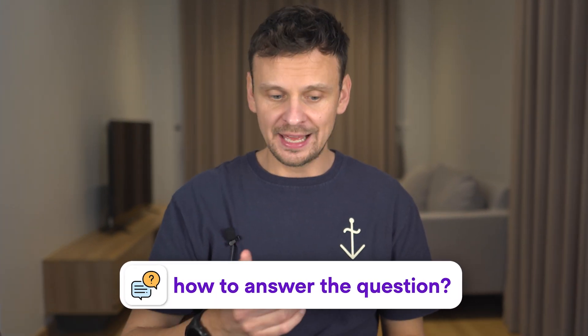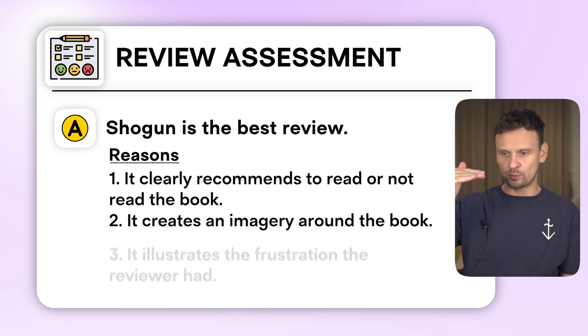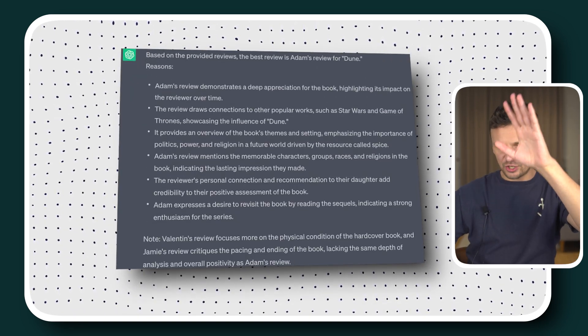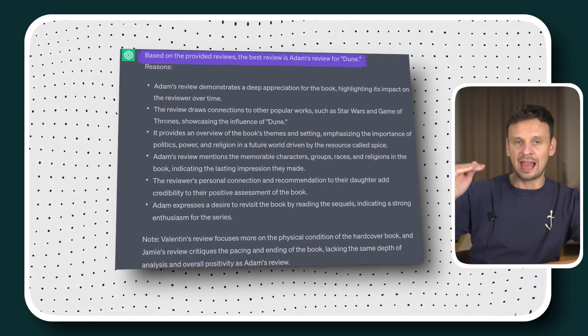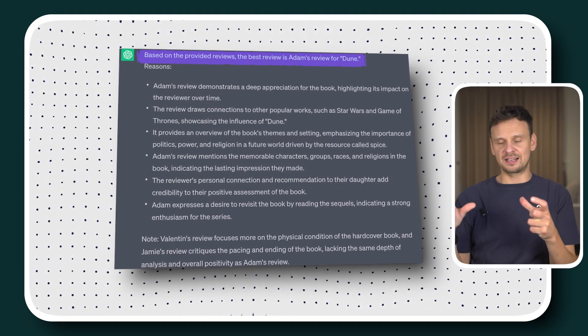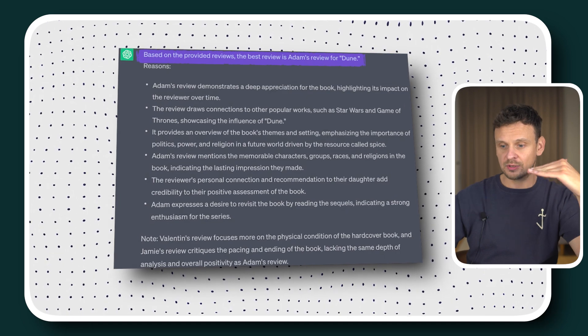Another interesting thing is that we can teach ChatGPT how to answer a question in terms of format. For example, going back to the reviews, we give it an example of what a review assessment looks like — showing it that Shogun is the best review with three bullet reasons. Then we ask our question. ChatGPT responds in exactly that bullet list format, so we don't have to sift through long paragraphs to get the right answer.